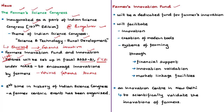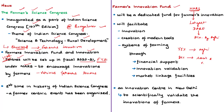The Farmers Innovation Fund will be created under the National Agriculture Research System (NARS), one of the largest in the world, under the Department of Agriculture Research and Education in the Ministry of Agriculture and Farmers Welfare. This will be a dedicated fund for farmers' innovation. Its creation is significant because around 55% of India's population is directly or indirectly connected to agriculture and about 80% of Indian farmers are small and marginal farmers. This fund will support farmers financially for their innovation and enable market-linking facilities.